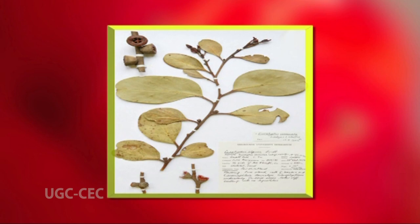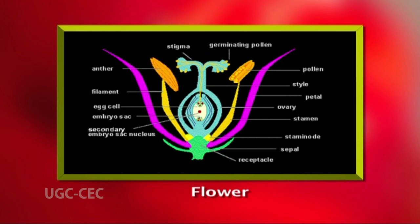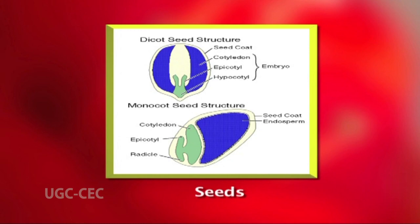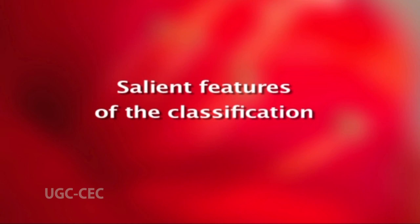Most of the prominent herbaria of the world are arranged according to this system. In this system, families were arranged as per the increasing complexity of the flower, fruit, and seed development.